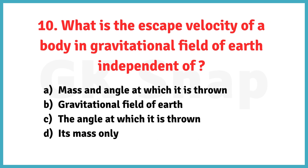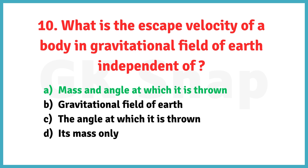What is the escape velocity of a body in the gravitational field of Earth independent of? Correct answer is option A. Mass and angle at which it is thrown.